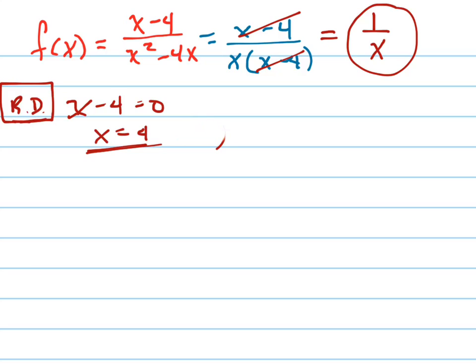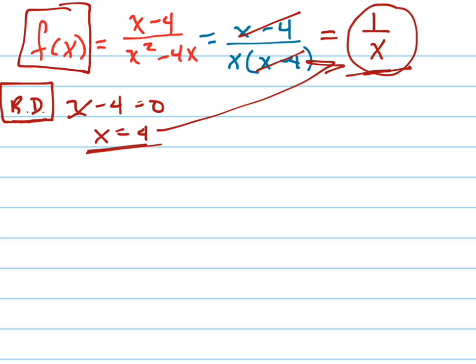This is my new f of x. When I plug x equals 4 into 1 over x, I get 1 fourth. So my point is (4, 1/4). That's my hole, or my removable discontinuity.